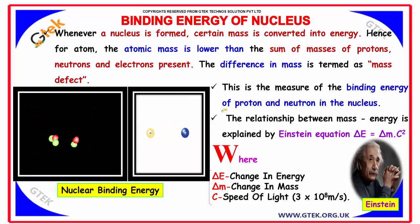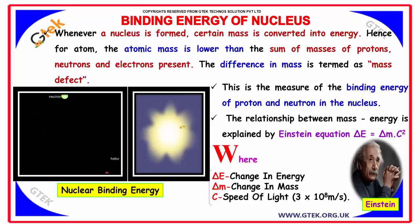The difference in mass is termed as mass defect. This is the measure of the binding energy of proton and neutron in the nucleus.